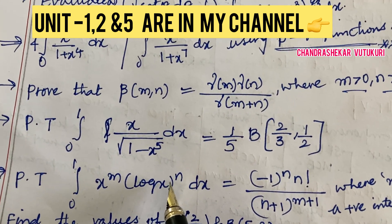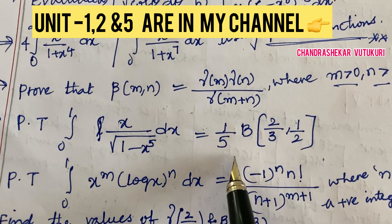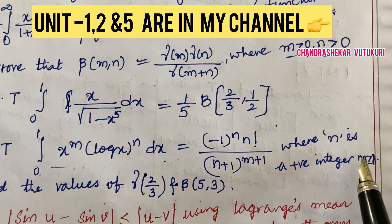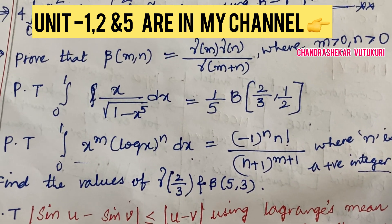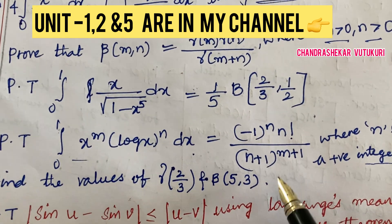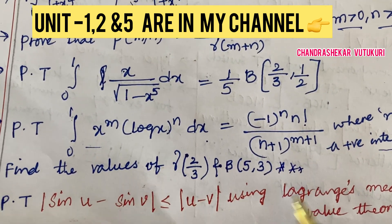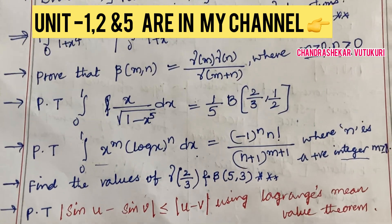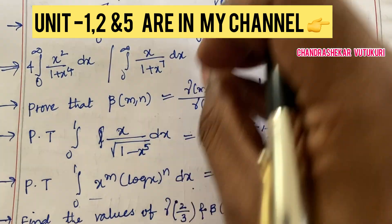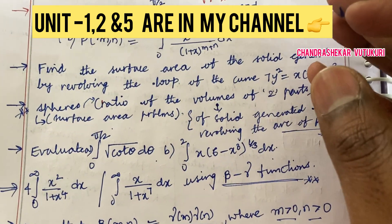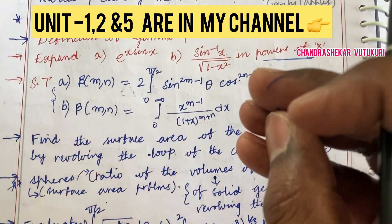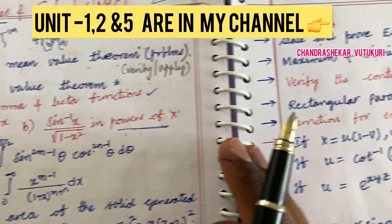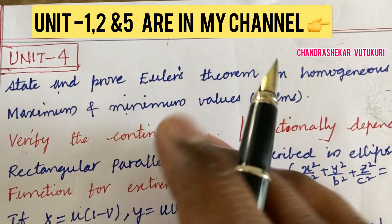Prove that beta of m, n where m is greater than 0 and n is greater than 0. Prove that this integration should equal this, and where n is a positive integer, where m greater than minus 1. Find the values of gamma and beta functions as a short question. Using Lagrange mean value theorem, you are going to prove such type of equations. Do not take into consideration only these numerical values and symbols—I am highlighting the picture of the question paper which you are going to get from Unit 3.